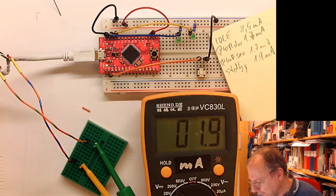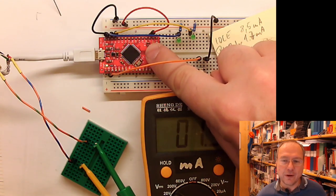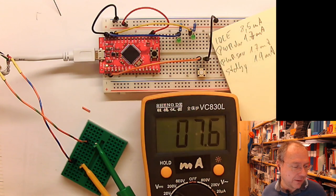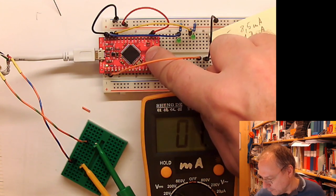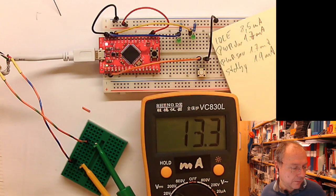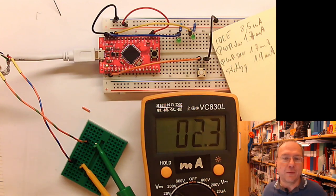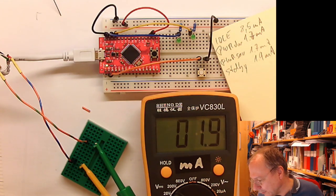And let's see how much current goes there when it actually is programming the microcontroller. Oh, 20 - it's quite exactly 20 milliamps. But this is the highest power consumption so far.